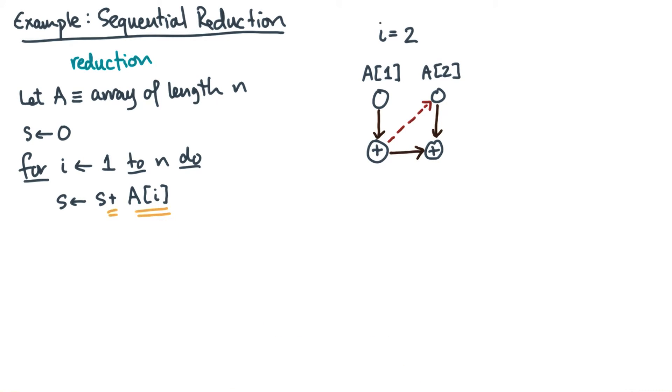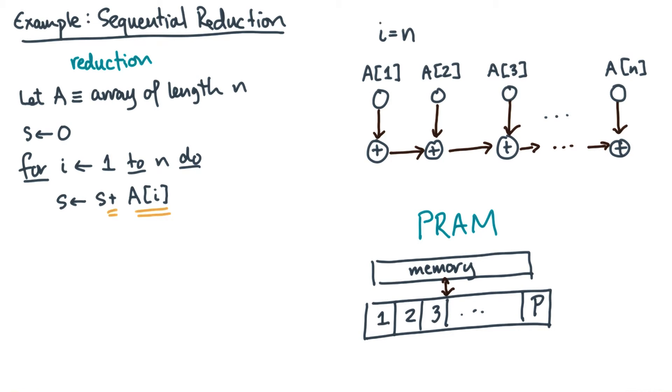Now for now, we're going to ignore these control dependencies. So if we ignore the control dependencies and we continue this process, then you'll get a DAG that looks something like this. Now suppose I give you a PRAM with P processors. How long will it take the PRAM to execute this DAG? Let's call that time T sub P of N.